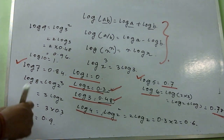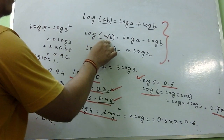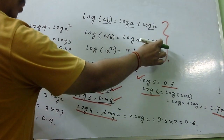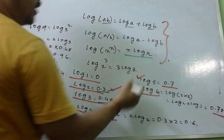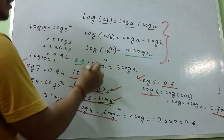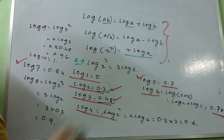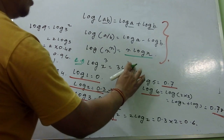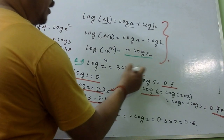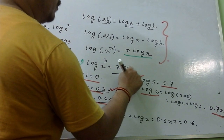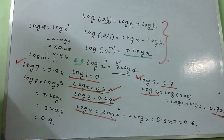Logarithm tricks: log(ab) means log a plus log b. log(a/b) means log a minus log b. log(x to the power n) means n times log x. For example, log x cube equals three log x — whatever is in the power comes up in front.